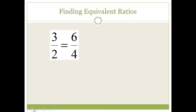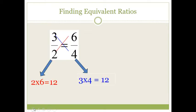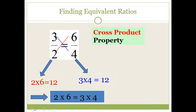Let's take a look at finding equivalent ratios. Suppose I have the ratio three over two is equal to six over four. We can check that these two fractions are equivalent by doing the cross product. Three times four should equal two times six. Three times four is twelve, and two times six is twelve as well. Therefore, we verify that these two ratios are in fact equivalent.